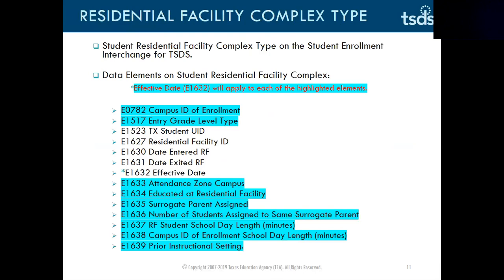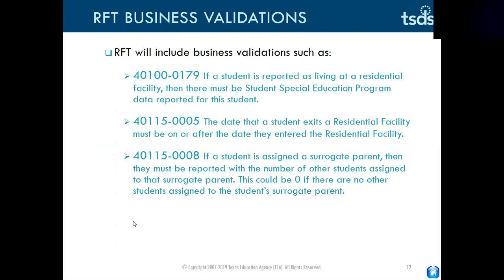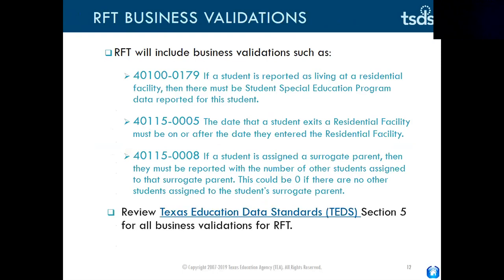The residential facility complex type on the student enrollment interchange consists of the data elements listed here. Please take a moment to review the list and note that element number E16-32, which is effective date, will apply to each of the highlighted elements. Again, elements are pieces of information that are reported. RFT business validations are errors such as fatals, special warnings, and warnings that you could get after you promote and validate your data. There are examples listed here and you may also reference TEDS section 5 for all business validations in RFT.